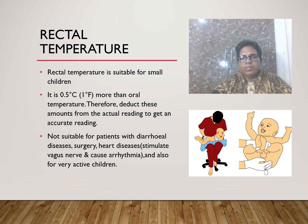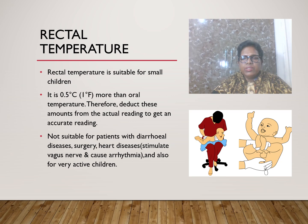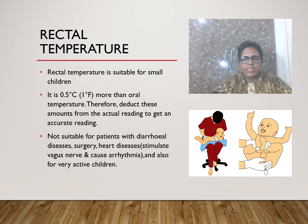Rectal temperature is also suitable for small children. It is 0.5°C or 1°F more than oral temperature, so deduct this amount from the actual reading to get the accurate temperature. It is not suitable for patients with diarrheal diseases, surgery, or heart diseases, because it can stimulate the vagus nerve and cause arrhythmia.